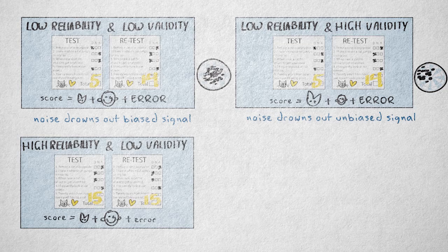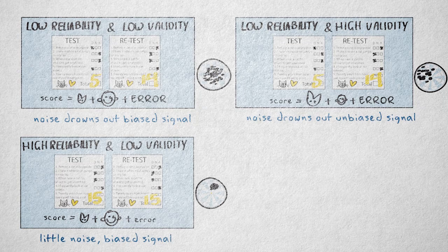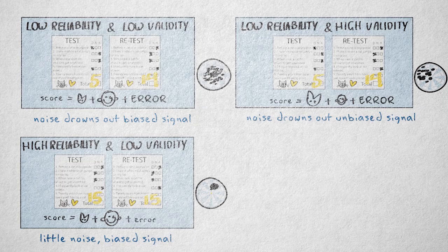An instrument can also have high reliability and low validity. A small amount of random error, but a lot of systematic error. We're measuring the wrong property very precisely.